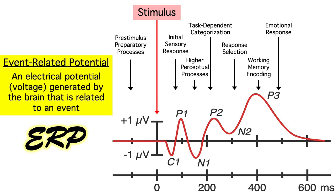That's what an event-related potential is. It's a voltage, an electrical potential, that's related to an event like a picture on a computer screen, a spoken word, or a button press.